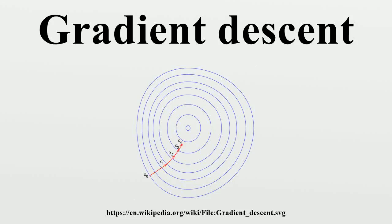Gradient descent is a first-order optimization algorithm. To find a local minimum of a function using gradient descent, one takes steps proportional to the negative of the gradient of the function at the current point.